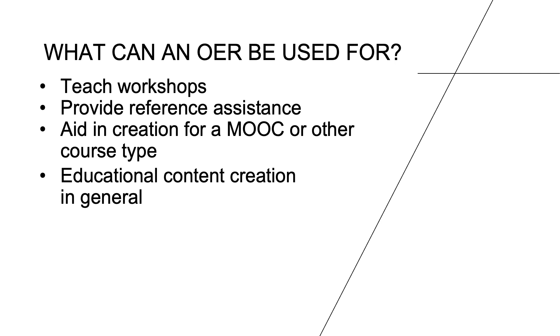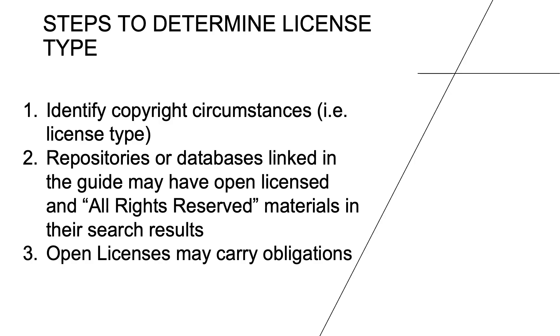Now, here's the thing with OERs. Remember when I said they could be either under open access or open license, or both? Well, that's the tricky part — it's not always clear. So once we have a resource that could potentially be an OER, we need to determine its license type. To do so, we need to first identify copyright ownership and any restrictions that apply. The repositories or databases linked in the guide may have open licensed and all-rights-reserved materials categorized in their search results. However, open licenses can still carry obligations. In the exercise, I'll go over how to determine what those obligations are and how to parse them out.